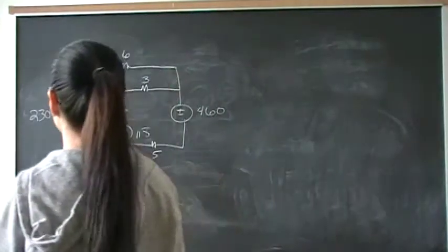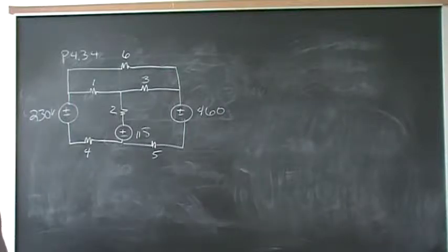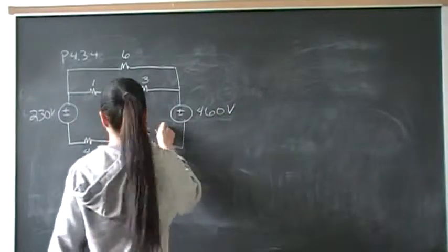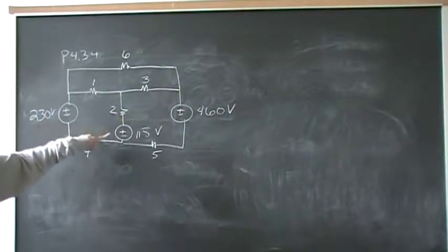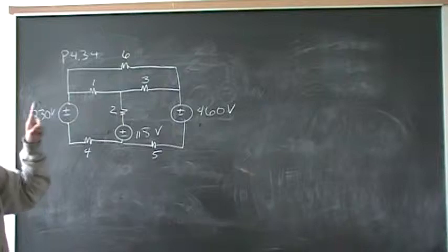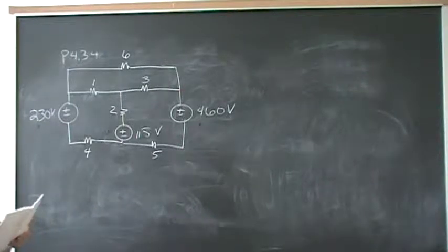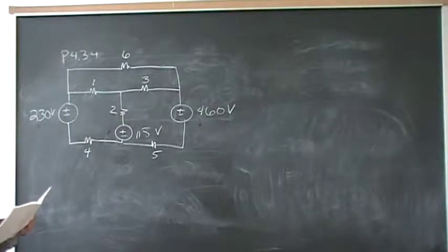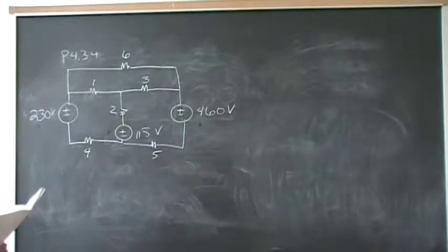Hi YouTube. This problem is number 34 from chapter 4, from the section on mesh currents. We have three independent voltage sources: 230 volts, 115 volts, and 460 volts. The resistor values are 1, 6, 3, 2, 4, and 5 ohms. In part A, we need to use the mesh method to find the total power developed. In part B, we need to prove that power developed equals power dissipated.